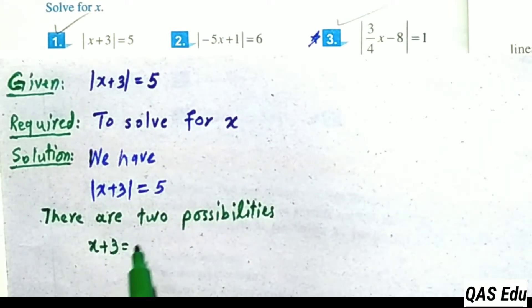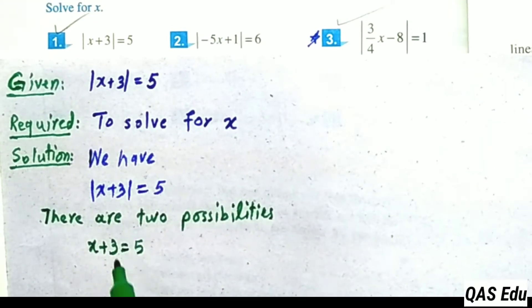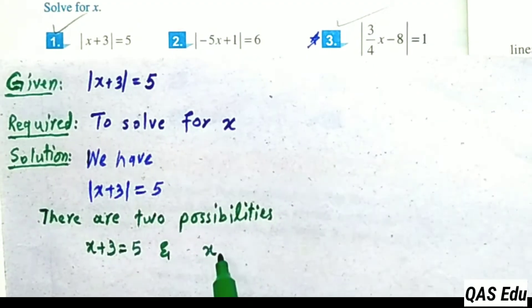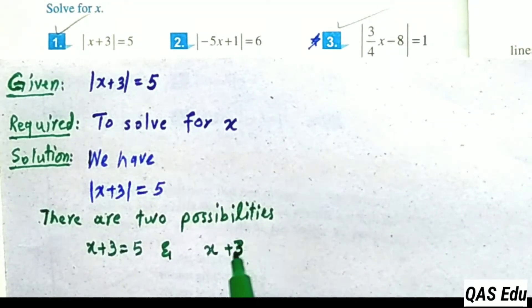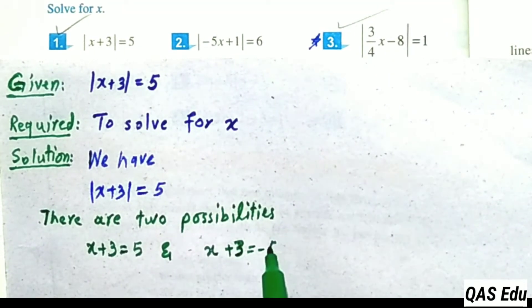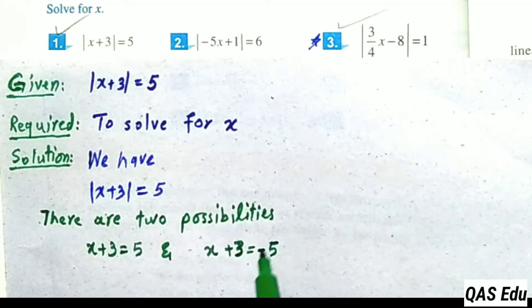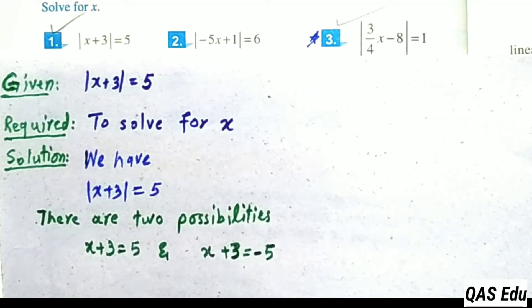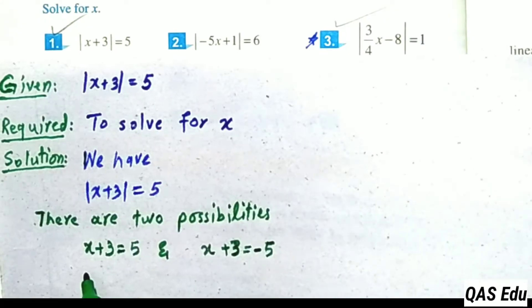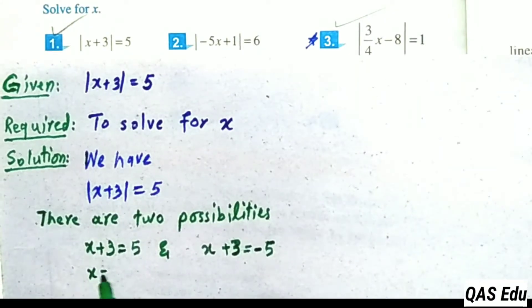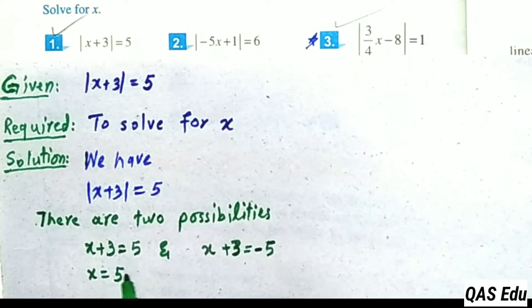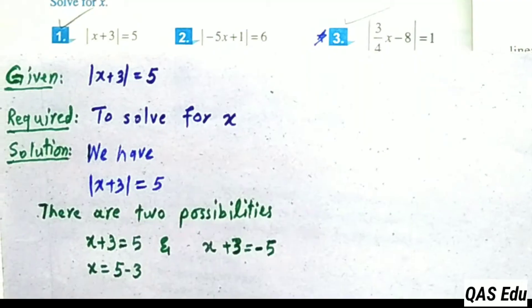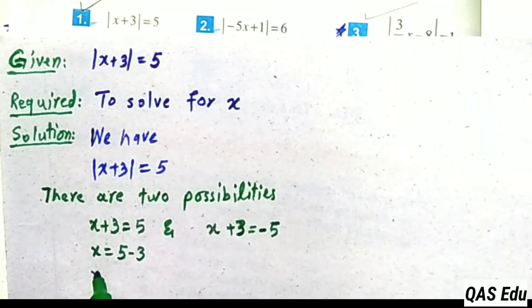Two possibilities: x plus 3 is equal to plus 5, and x plus 3 is equal to minus 5. From the first: x plus 3 equals 5, subtract 3 from both sides, giving x equals 2. From the second: plus 3 becomes minus 3.